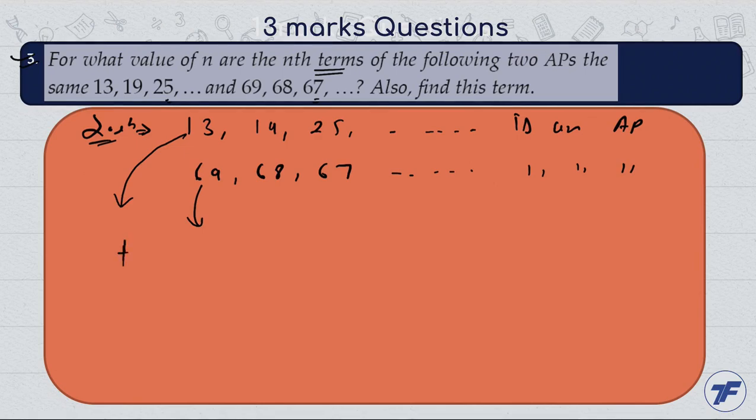Let us do this. We have the nth term Tn for the first AP and Tn for the second AP. To find the nth value, we equate the nth term of the first AP with the nth term of the second AP.